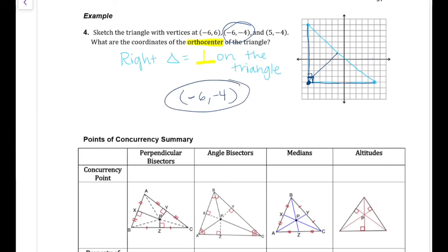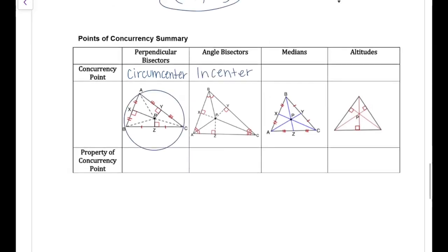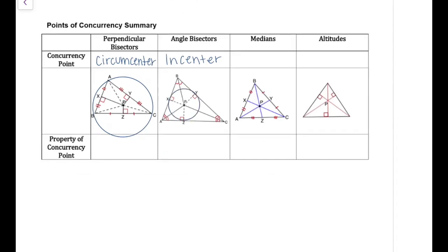Now we've learned four types of concurrency points. The circumcenter makes a circle around the outside vertices. The incenter makes a circle on the inside of the circle with the perpendicular bisectors.